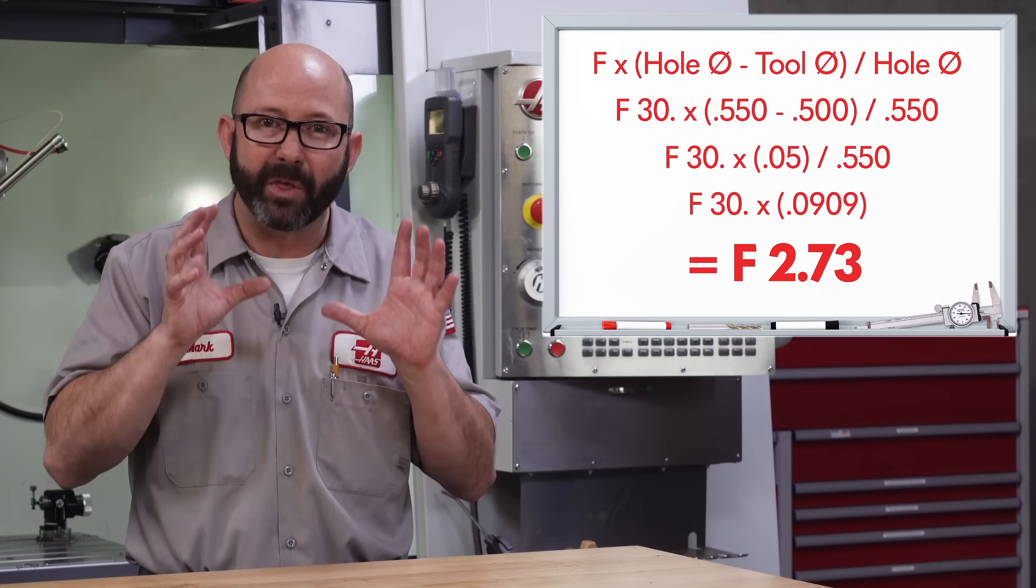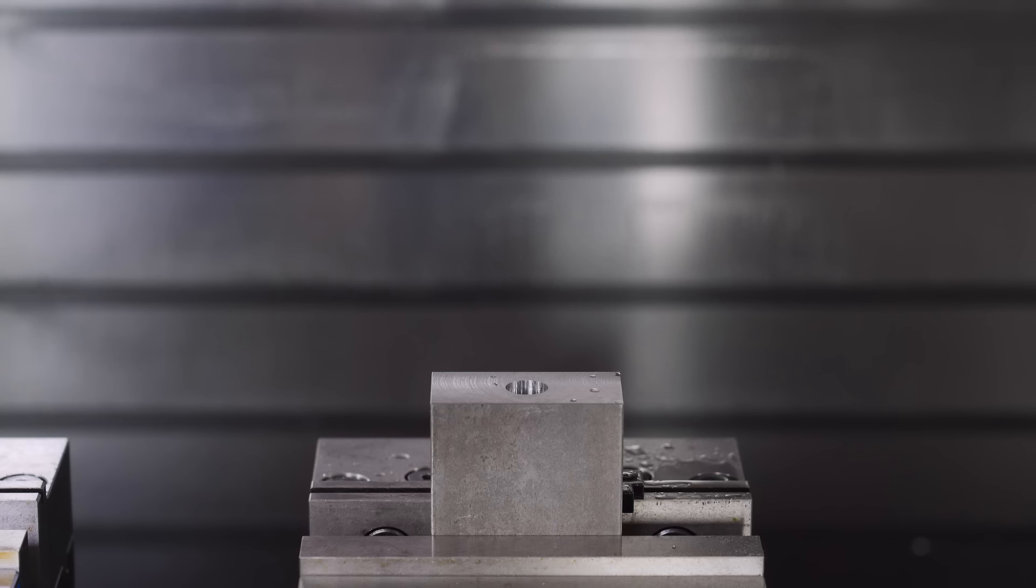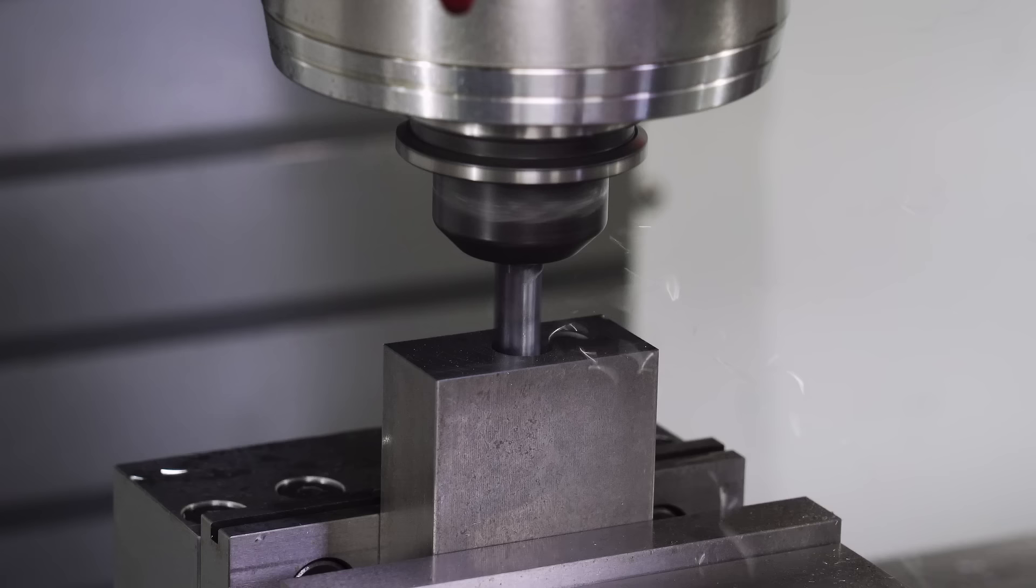With that F2.73 at the center line of our tool, we're going to end up with an effective feed rate of 30 inches a minute where it matters, at the edge of our tool. So, if our whole diameter is 11 times bigger than our tool path diameter, then we need our feed rate to be 11 times smaller.